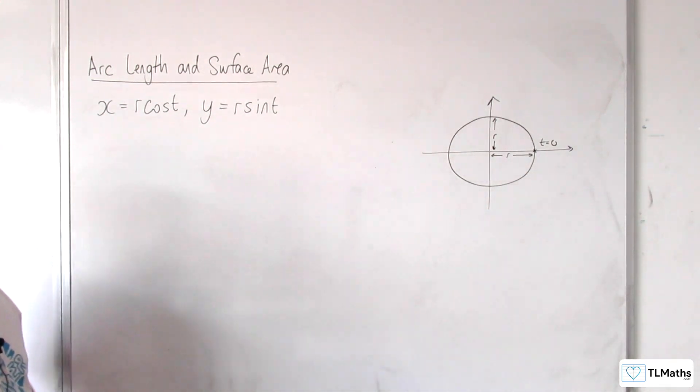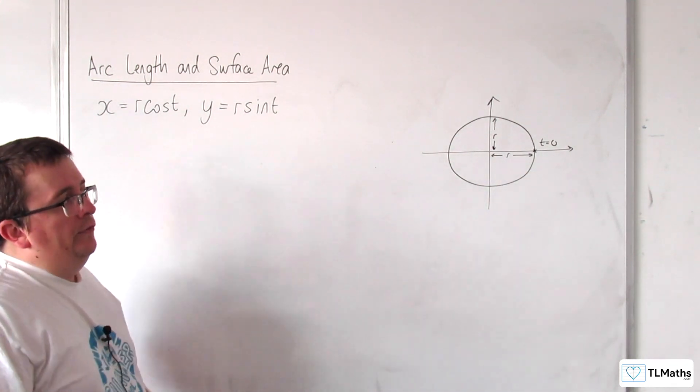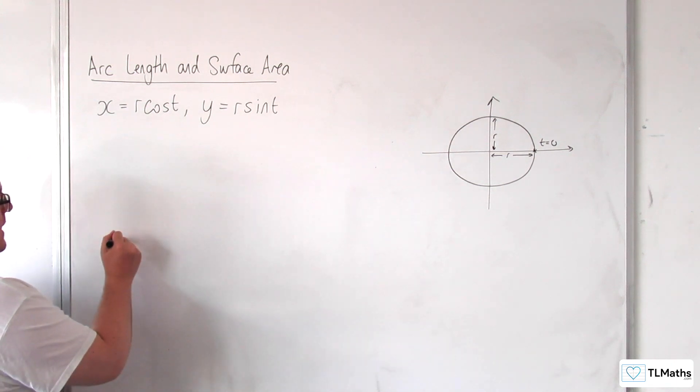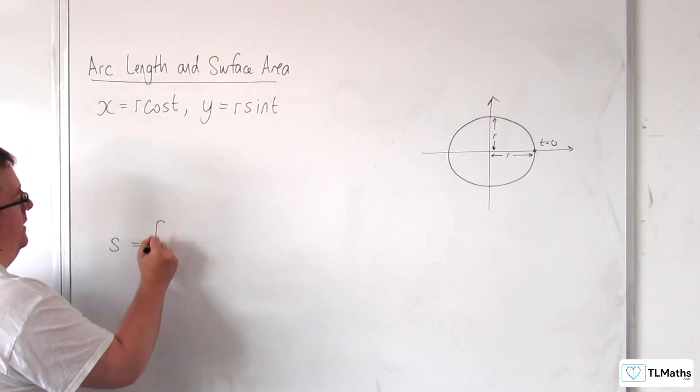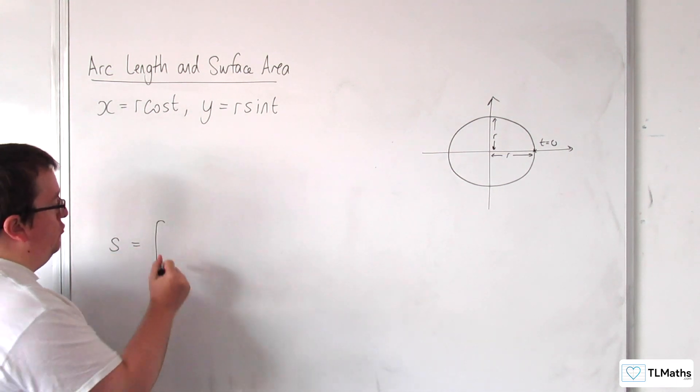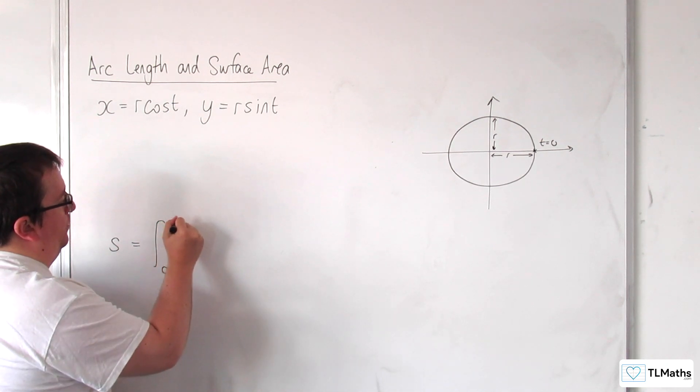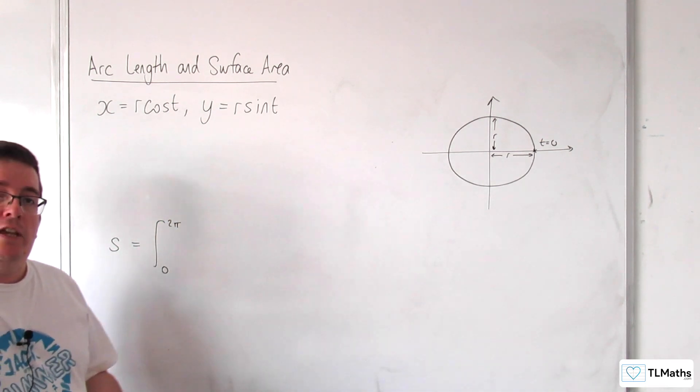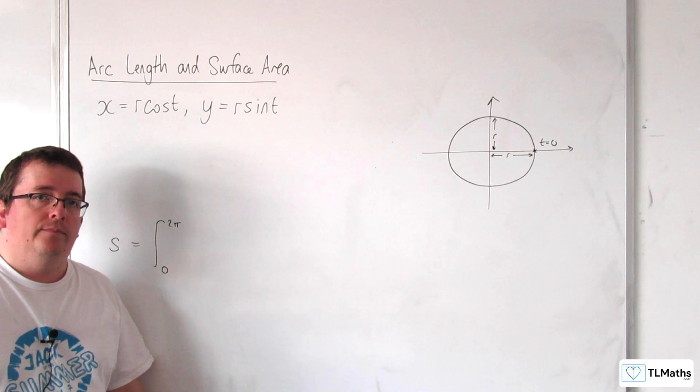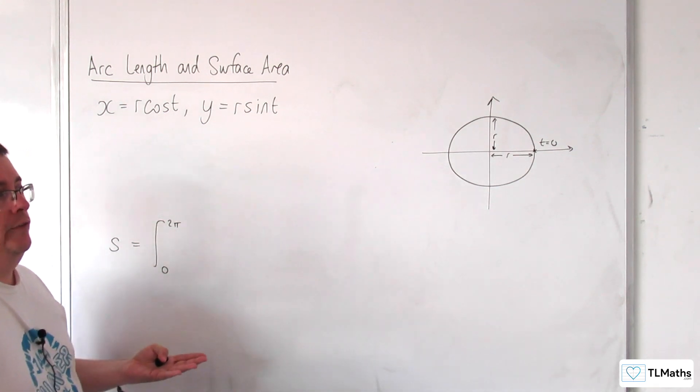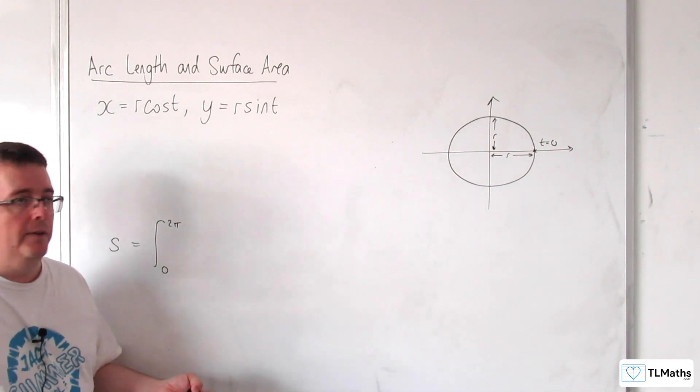And so what we would be expecting to find is if we were looking at s, the length of the arc, integrating between 0 and right around to 2π, we would be expecting a result of 2πr for the circumference of the circle or π times the diameter.